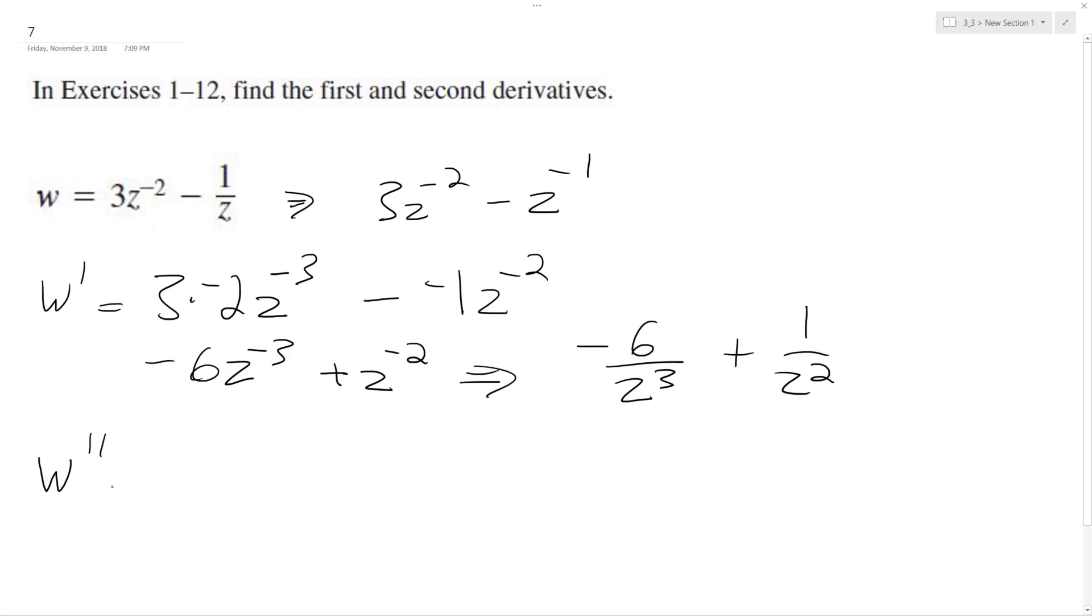Okay, and then w double prime is just going to be negative 6 times negative 3z raised to the negative 4th, so plus negative 2z raised to the negative 3rd. And it's going to be positive 18z raised to the negative 4th minus 2z raised to the negative 3rd.